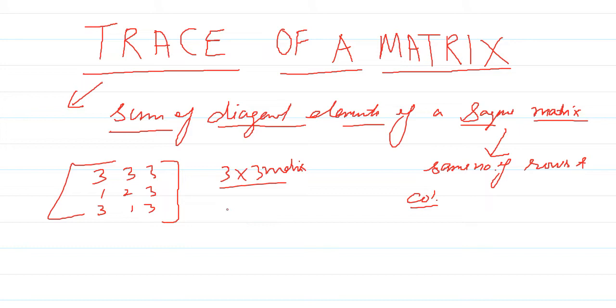So this is called a square matrix. So how do you find the trace of a matrix? Like I will consider a square matrix.